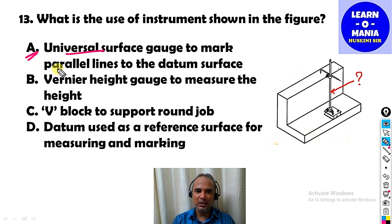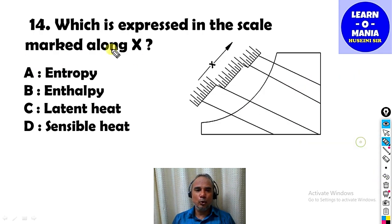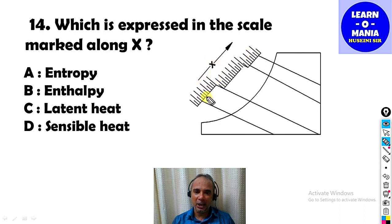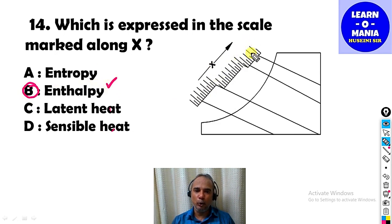Next question: Which value is expressed on the scale marked along X on the psychrometric chart? The answer is option B — this is the enthalpy scale. Enthalpy means total heat content.